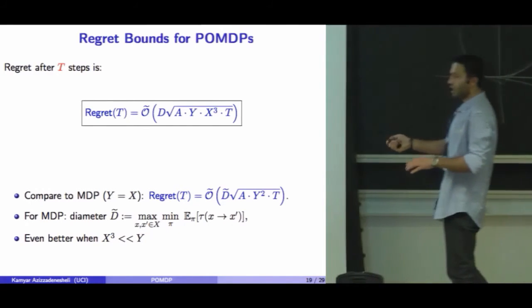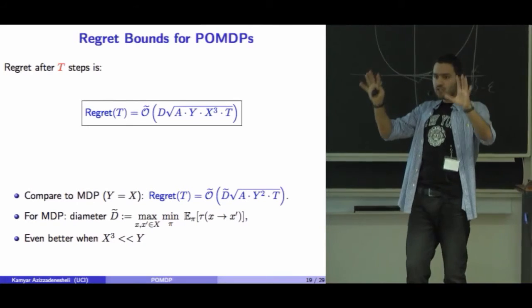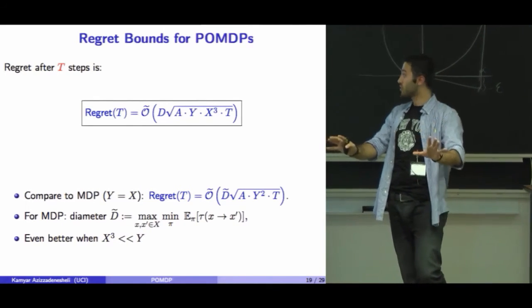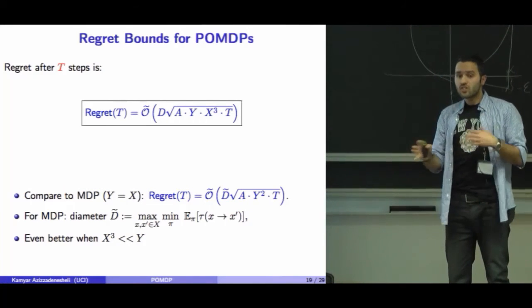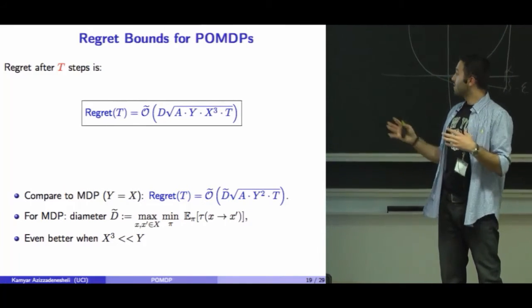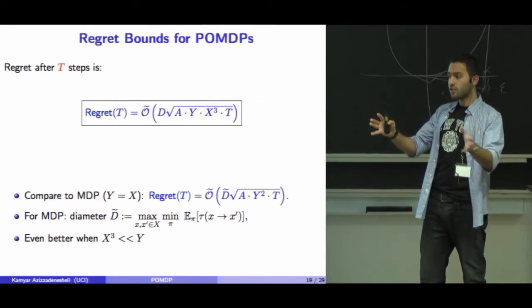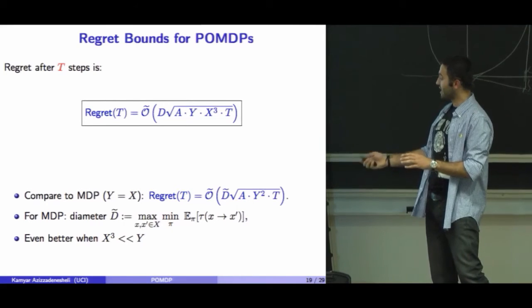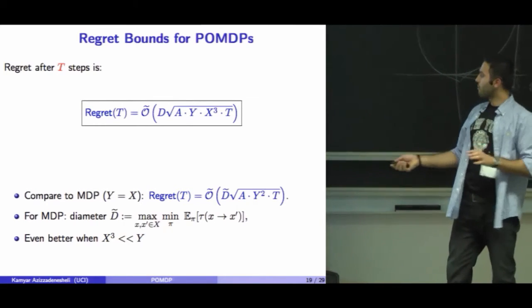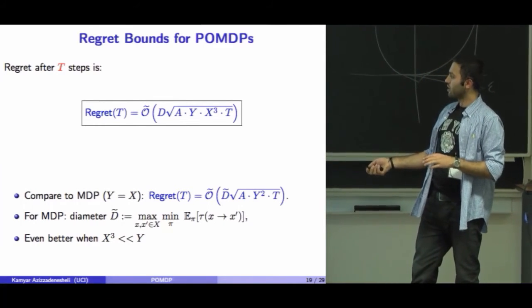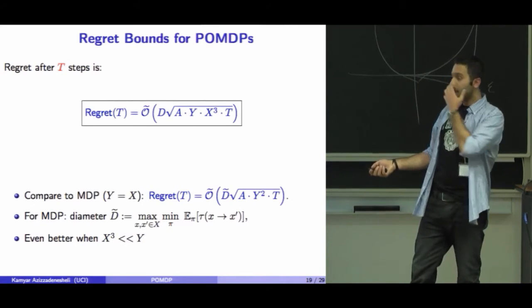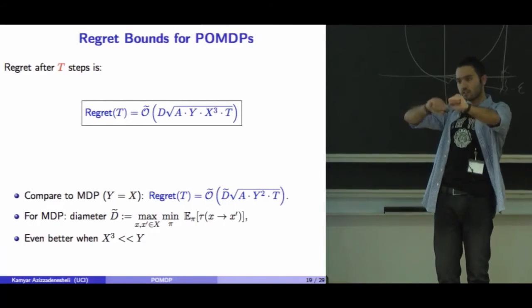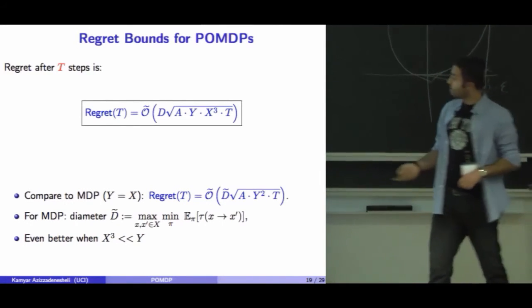In this model, what we observe is the full observation. For some cases, the number of possible observations might be larger than the number of hidden states. For example, when the number of possible observations is larger than X cubed, this algorithm works better — the regret is kind of better than MDP.